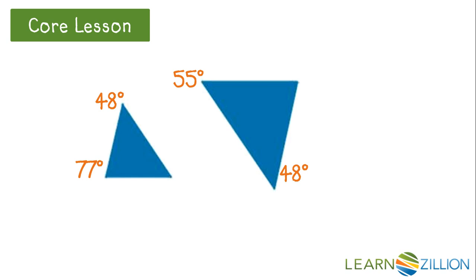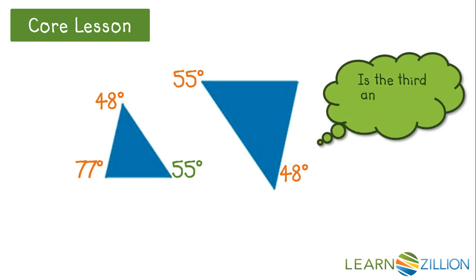So we have two triangles here. This smaller triangle is on the left. We need two corresponding angle measures to be equal for the triangles to be similar. Right now, we've got 48 degrees in both triangles and 55 degrees in both triangles. So we could state that these two triangles are similar, but is the third angle also congruent? Let's find out.